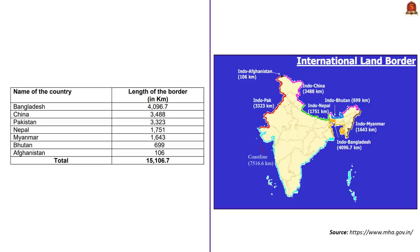Many of you might know this trick: Bajpan MBA. For those who are new to UPSC preparation, you can use this mnemonic where BA stands for Bangladesh, CH for China, PA for Pakistan, N for Nepal, and in MBA: M for Myanmar, B for Bhutan, and A for Afghanistan. This is in the decreasing order of length of the boundaries which India shares with these countries.